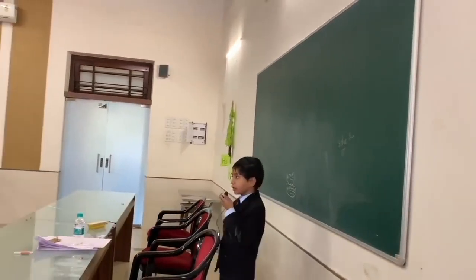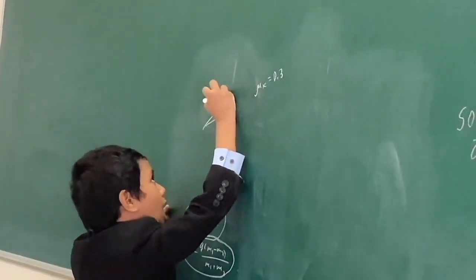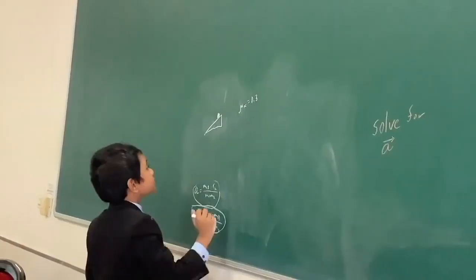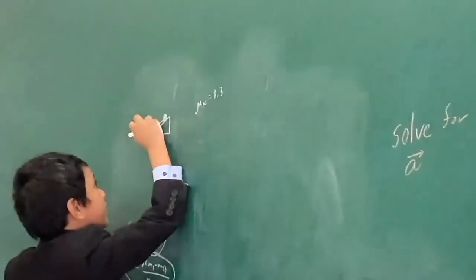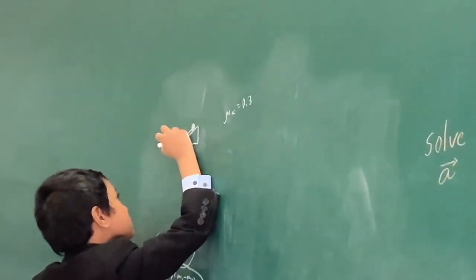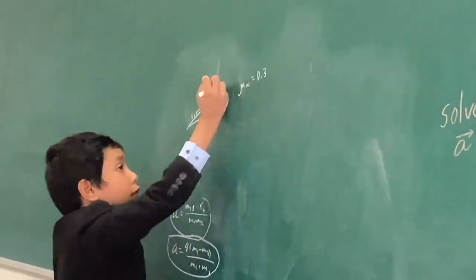The incline has a coefficient of friction of about 0.3. Let's say that it's inclined at an angle of 30 degrees. Let's just disregard that for now. But anyway, this has a force in front of it, fd parallel, and then a force behind, which is ff.